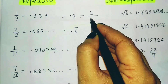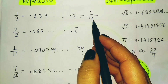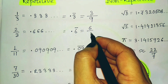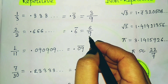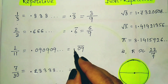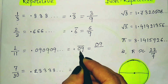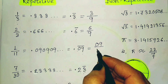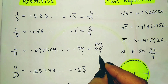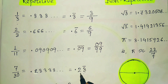Similarly, 0.6̄ = 6/9, which simplifies to 2/3. For 0.09̄, there are two digits (0 and 9) under the bar, so write 99 in the denominator: 09/99 simplifies to 1/11. For 7/30, represented as 0.2̄3̄, the conversion gives 21/90, which simplifies to 7/30.